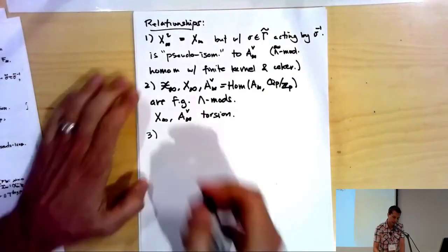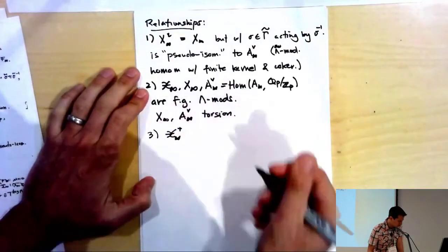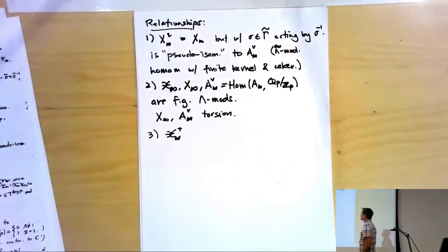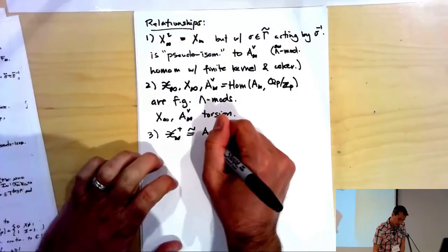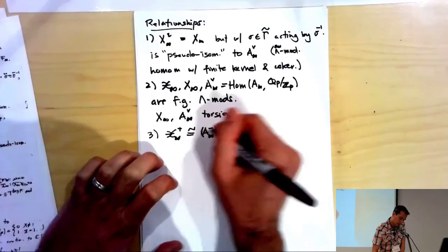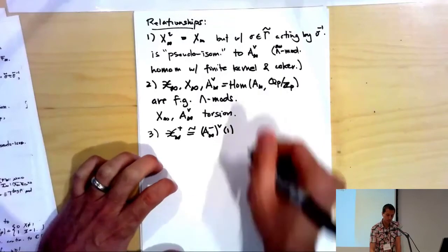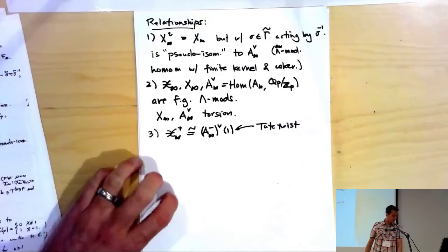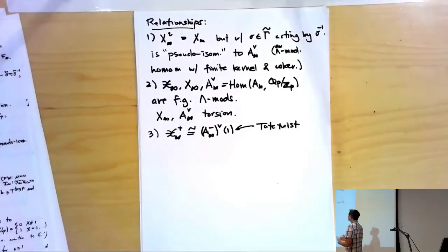There's also a relationship with the minus part appearing in the last talk: the plus part of 𝒳_∞ is actually isomorphic to the Tate twist of the Pontryagin dual of the minus part of A_∞ — a kind of Kummer duality.